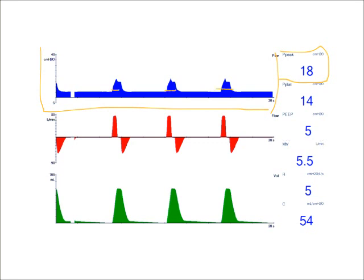During this inspiratory phase, the exhalation valve is closed, and the patient can't exhale unless they reach the high pressure threshold setting. This is usually an alarm setting, and after the alarm setting there is also another safety backup setting.